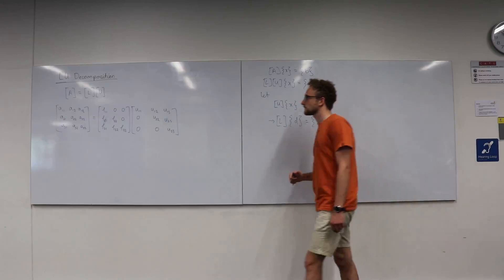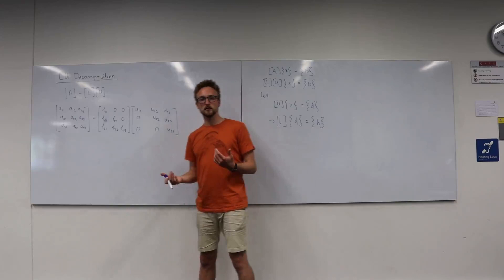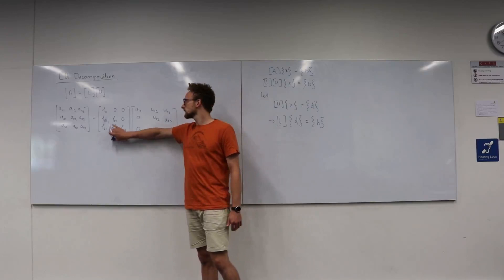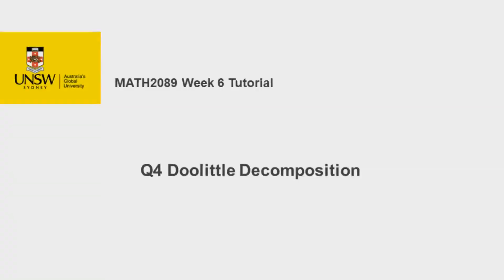With LU decomposition there are two different methods: Doolittle and Crout decomposition. With Doolittle decomposition, all of the diagonal terms in the lower triangular matrix are equal to 1. With Crout decomposition, all of the diagonal terms in the upper triangular matrix are equal to 1.